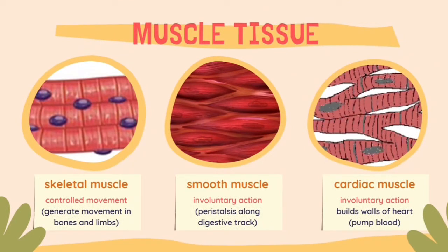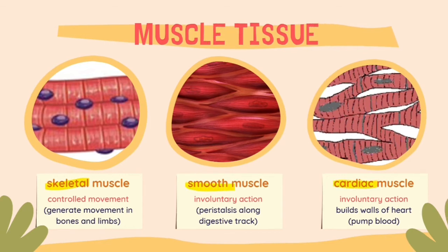Now let's move on to the second type of tissue, which is the muscle tissue. There are three types of muscle tissues you should know: the skeletal muscle tissue, the smooth muscle tissue, and the cardiac muscle tissue. First and foremost, we must be able to differentiate these three types based on their structure. The one that is obviously easy to determine is the smooth muscle, because it has a distinct spindle-like shape with a nucleus in the middle, which is very different compared to the structure of the skeletal muscle and the cardiac muscle.